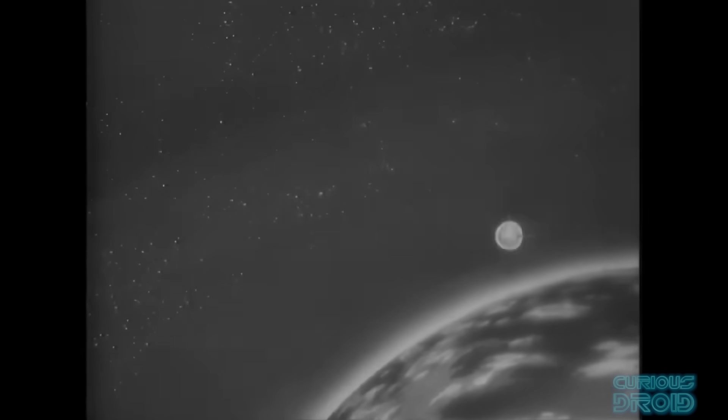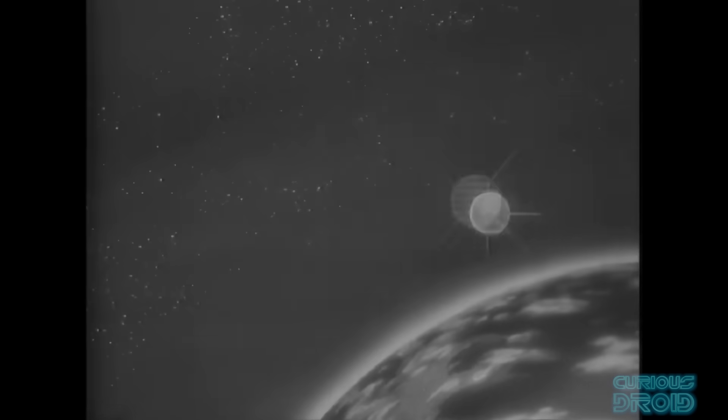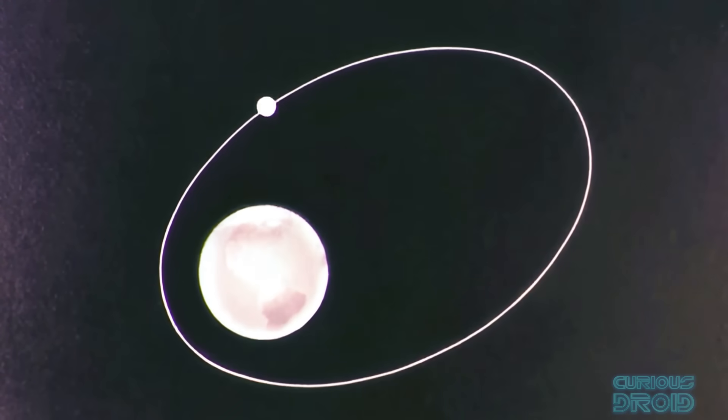The grapefruit-sized craft was sent up to determine the total electron count between the satellite and the ground stations. It's in a medium earth elliptical orbit between 654 km at its closest point and just short of 4000 at its farthest.